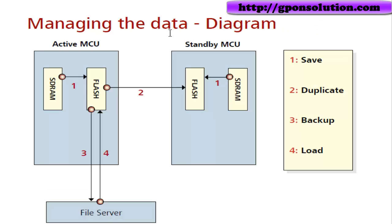In the data management diagram, we have the active MCU card and standby MCU card, each with SD-RAM and Flash. The operations are: number one, save SD-RAM to Flash; number two, duplicating active to standby; number three, backup to file server; and load from file server to Flash.